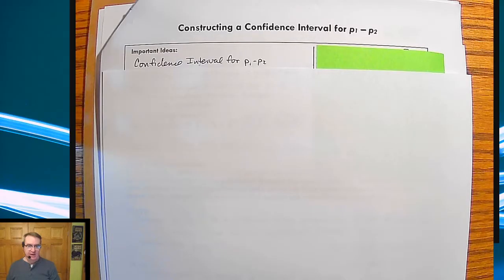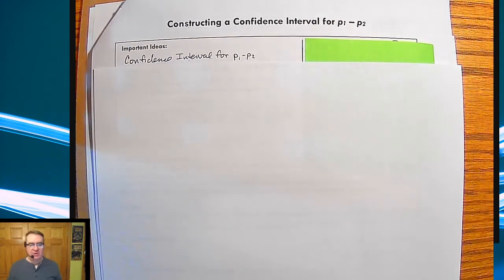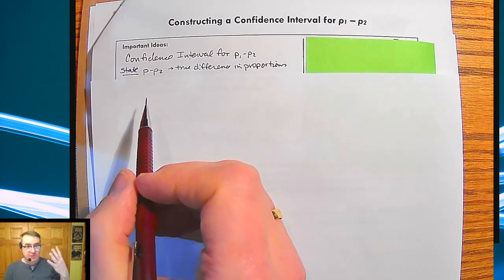We're talking about the difference in proportions and we are specifically going through the formalization of how to do that. So the first part, how to build a confidence interval for P1 minus P2. Again, we're going to use our four-step process.